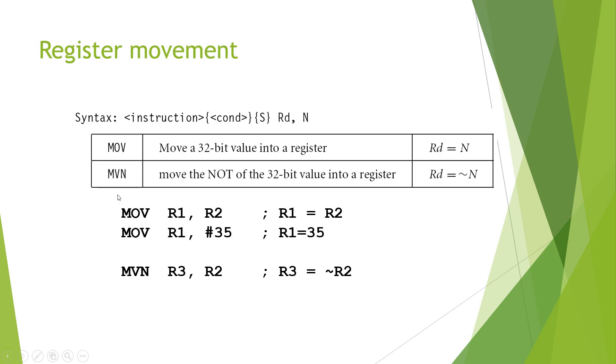Now, the program that we have follows with few important instructions. The first instruction that we need to study is the register movement. The value that I have to move between the registers or to initialize the register value. We have the instruction called as MOV. This instruction will have MOV condition S, RD the destination, N is an operand.